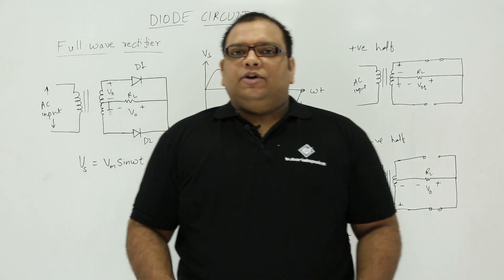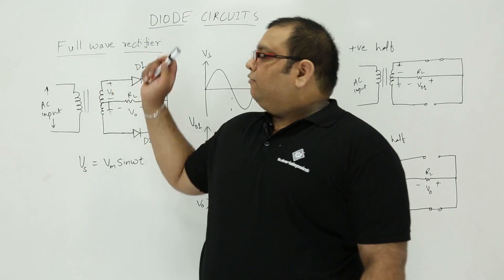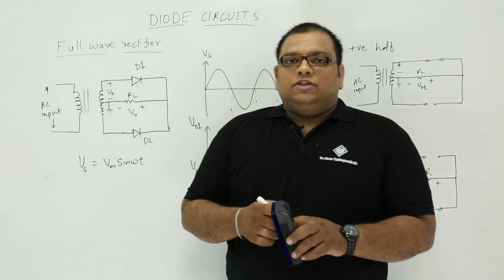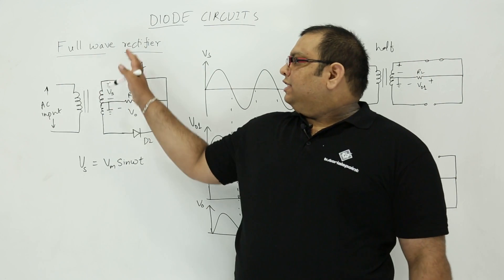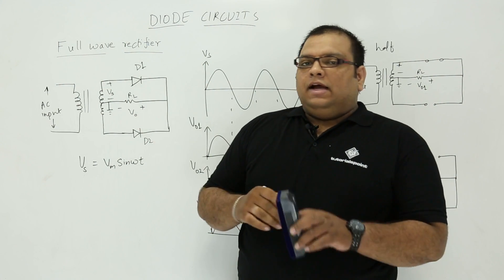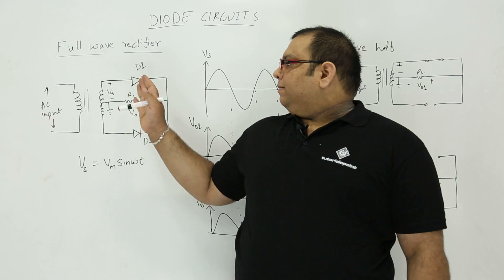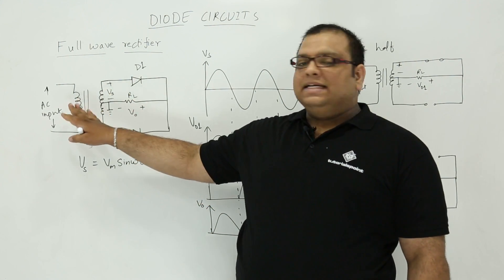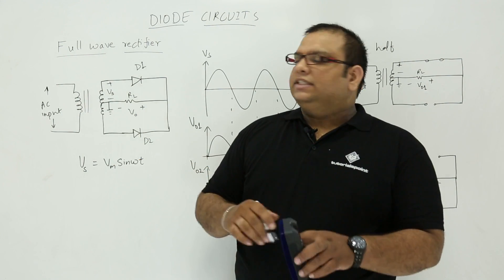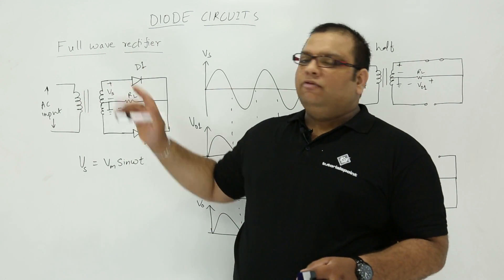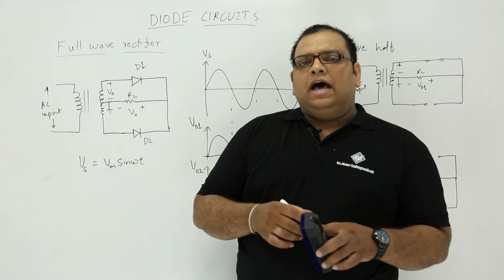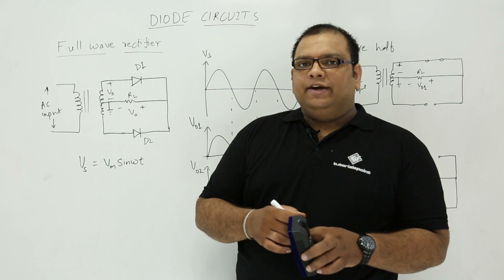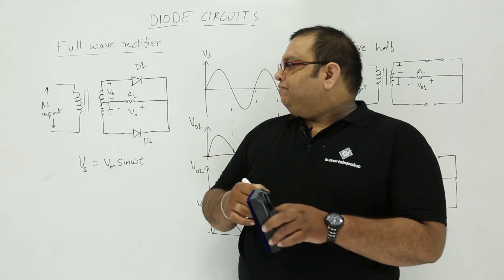Friends, let us discuss about full wave rectifier circuits. When you see the full wave rectifier, we have two diodes and a center tap transformer. This is called the center tap full wave rectifier. The other type of full wave rectifier is the bridge rectifier, which we will discuss in the next session.